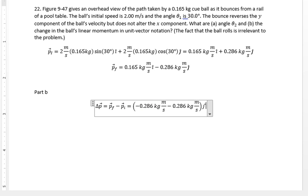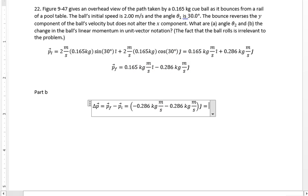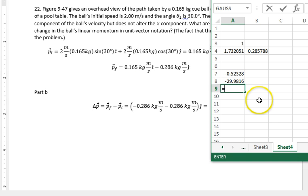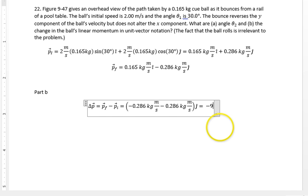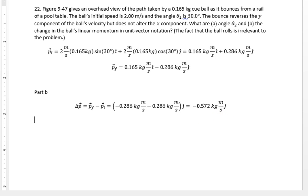in the j-hat direction, right? So twice 0.286 - 2 times 0.286, 0.572. So we've got minus 0.572 kilograms meters per second j-hat is the change of momentum, and that's it for problem 22.